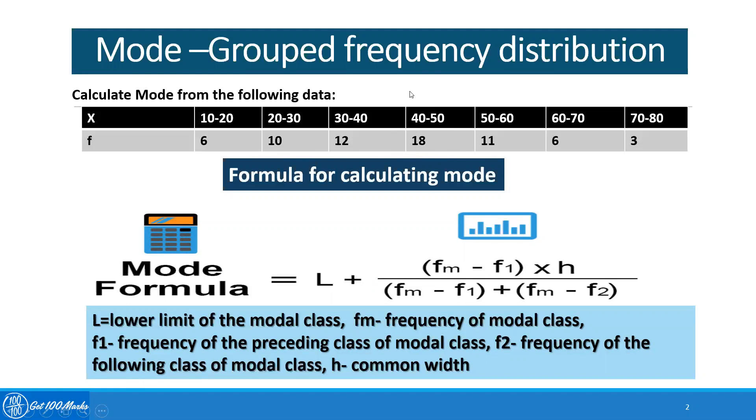40 to 50, this is my modal class. After identifying the modal class, L is the lower limit or lower boundary of the modal class. In this particular situation, this is 40.